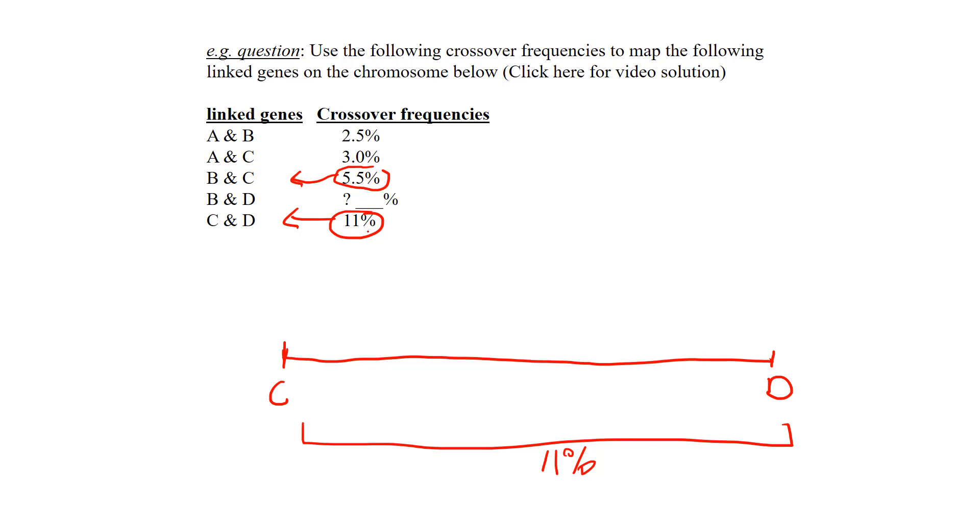So B and C—I'm going to take C here and go relatively in the middle and say that's B. And that is 5.5 percent crossover frequency.